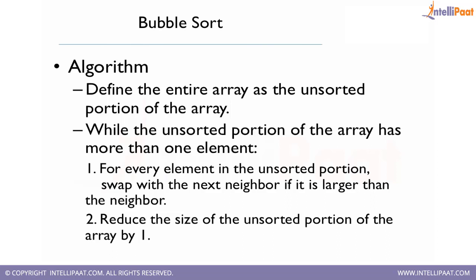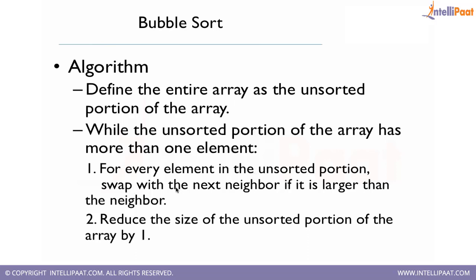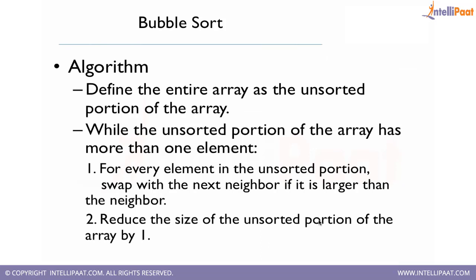To revisit the algorithm: define the entire array as the unsorted portion. While the unsorted array has more than one element — whatever is not shaded is the unsorted portion — for each element in the unsorted portion, swap with the next neighbor if it is larger. Like this, we shuffle all the bigger values towards the right portion of the array, reduce the unsorted portion by one each pass, and keep pushing the largest element to the end, finally ending up with the sorted array.